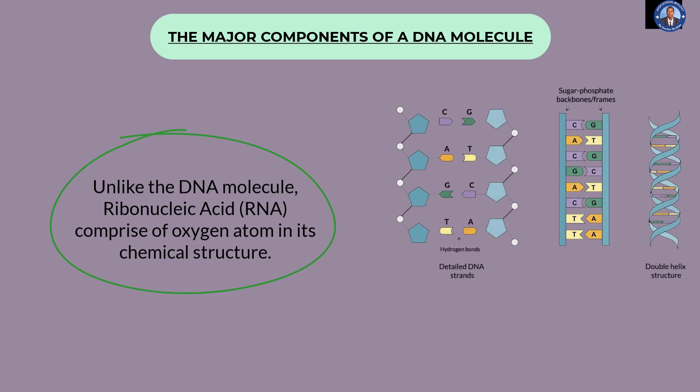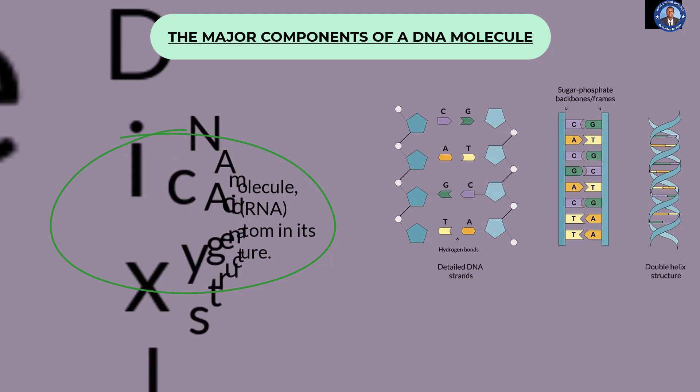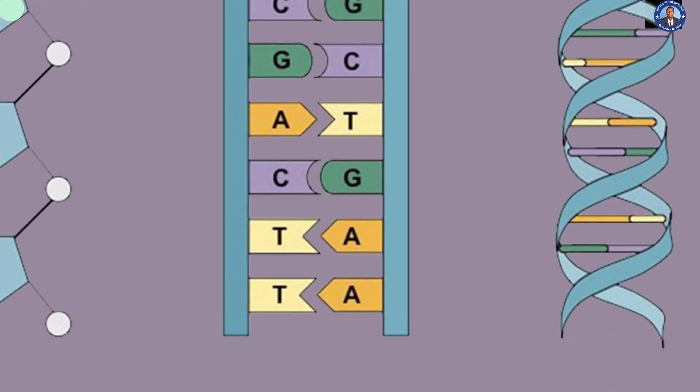We can also say that DNA comprise of a certain type of ribose sugar which do not have oxygen in it, while RNA comprise of the ribose sugar which contains oxygen as one of its atoms.